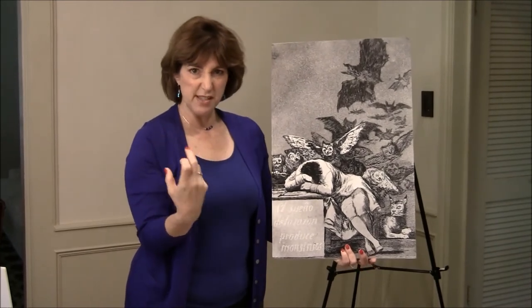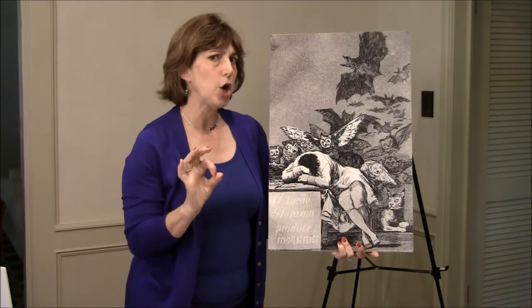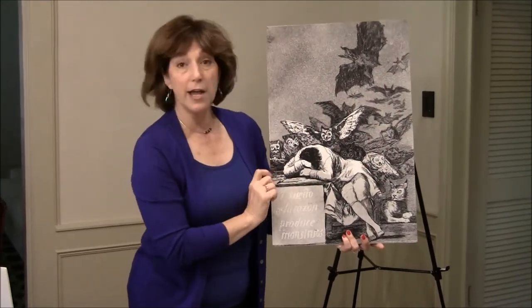Goya had 300 sets of the etchings printed for sale at a reasonable price, but only 27 sets sold. Rather than let the remaining 270 sets go to waste, he gifted them to the king in exchange for the king providing a pension to his family for the rest of their lives — and the king agreed. We know the exact number of unsold sets because they all went back to the king.